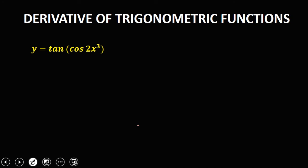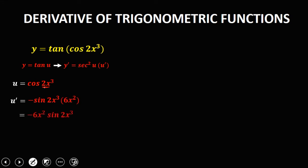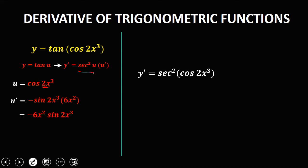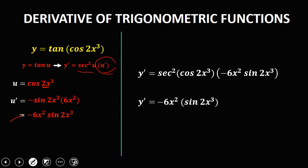For this given, y equals tangent of (cosine(2x³)). Since the derivative of tangent is secant squared u, here u equals cosine(2x³). The derivative of cosine is negative sine, times the derivative of 2x³ which is 6x² using the power rule. So u prime equals negative 6x² times sine(2x³). Therefore y prime equals secant squared(cosine(2x³)) times negative 6x² sine(2x³), giving y prime equal to negative 6x² sine(2x³) times secant squared(cosine(2x³)).